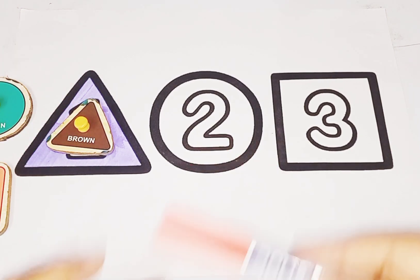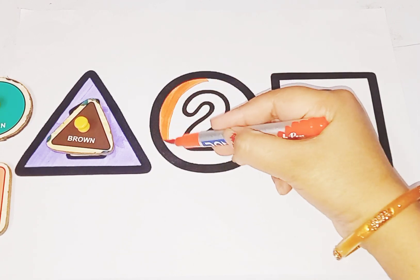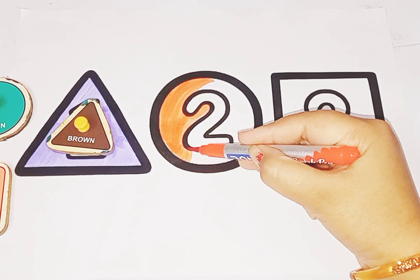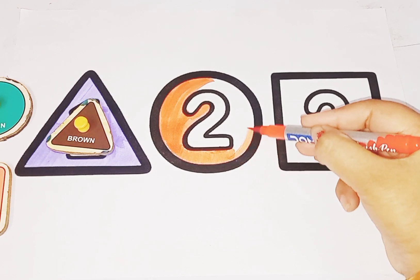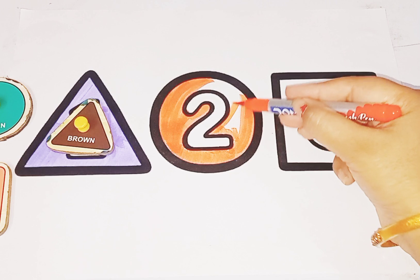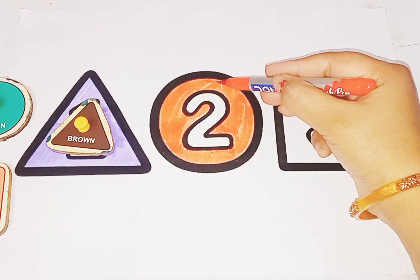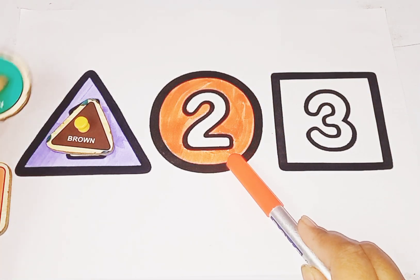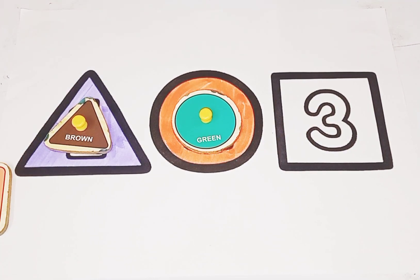Next, orange color circle. This is circle shape. Color is orange. Orange color circle, circle is like this, round round circle. Next is square.